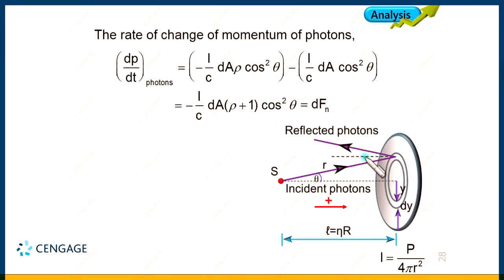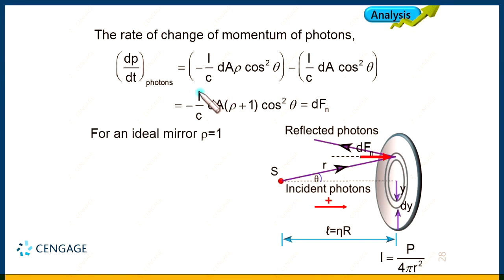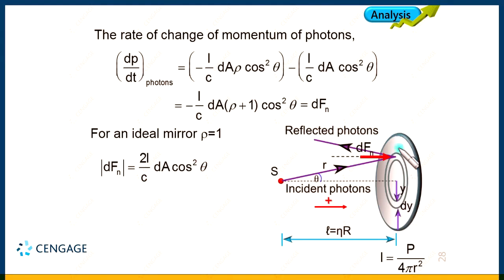Since the plate is an ideal mirror reflecting 100% of the radiation, ρ equals 1. Then the magnitude of the force is dFn = 2I/c · dA · cos²θ. Substituting I = P/(4πr²) and dA = 2πy · dy (the area of the ring), we get the expression for dFn. Now we need to integrate this function.